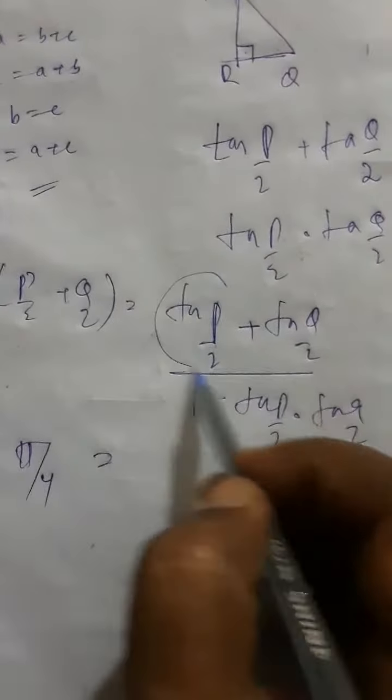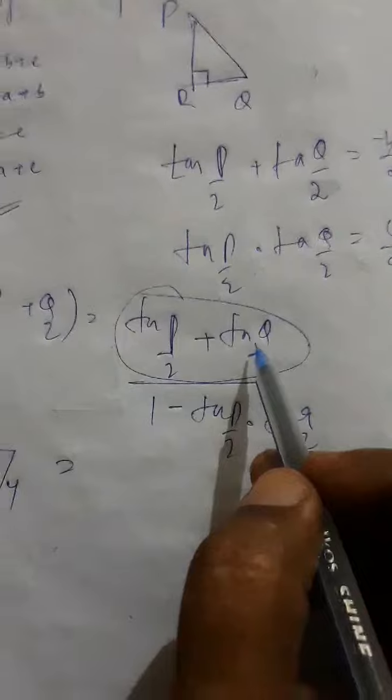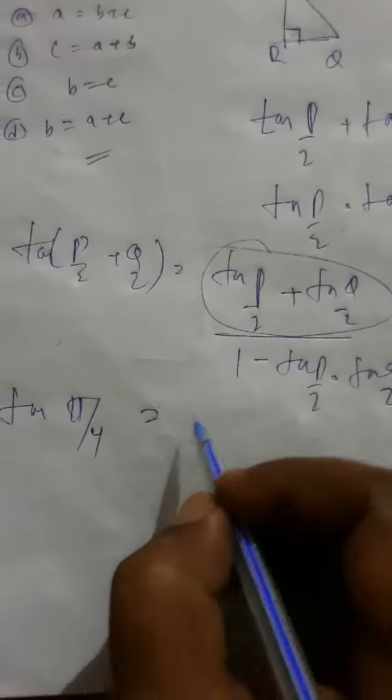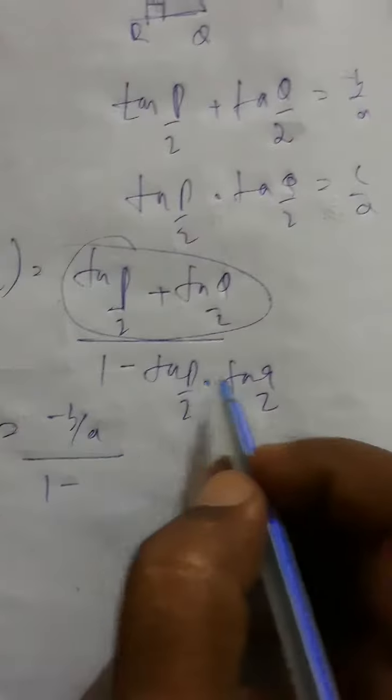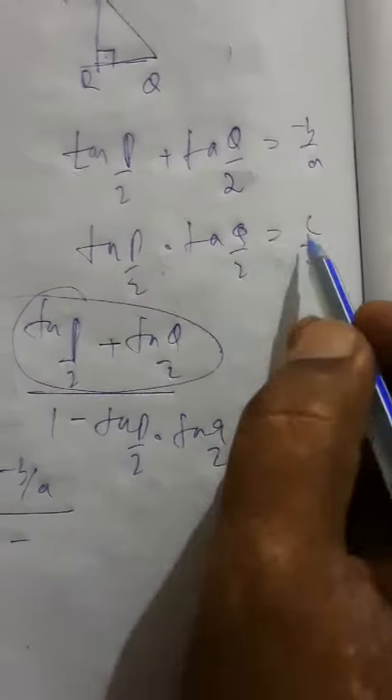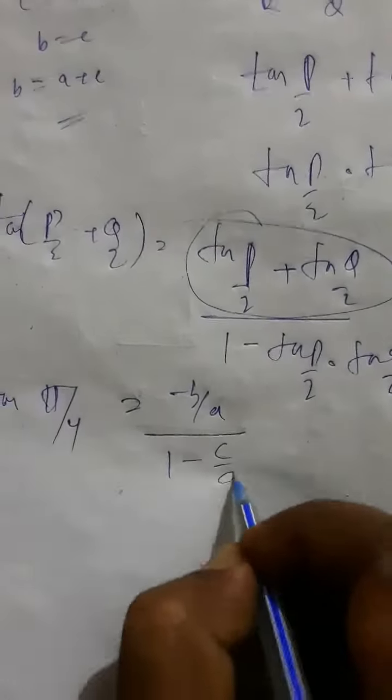That becomes, this is tan P by 2 plus tan Q by 2, that is minus B by A. So I will put here minus B by A upon 1 minus tan P by 2 tan Q by 2, that is C by A. So I will put here C by A.